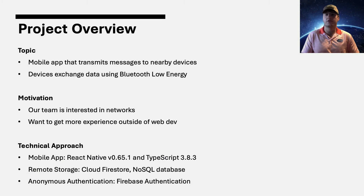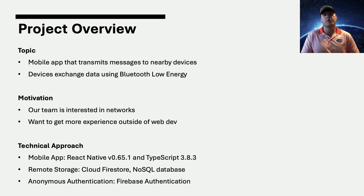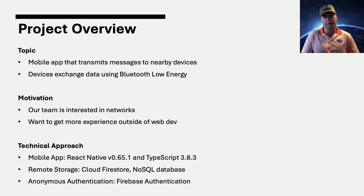Grapevine is a mobile application that transmits messages to nearby devices that are also running Grapevine. The devices exchange data using Bluetooth Low Energy. Our motivation is that we're both really excited about networks and exploring alternative links other than Wi-Fi and Ethernet. Additionally, we both have a lot of web development experience and wanted to reach out of our comfort zone and work on a mobile application.